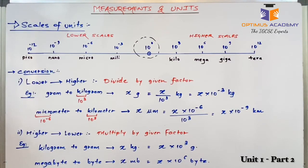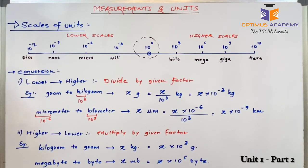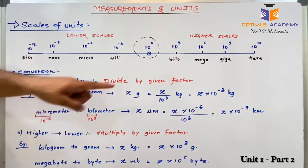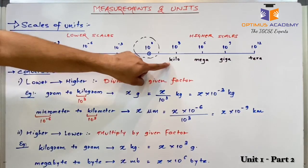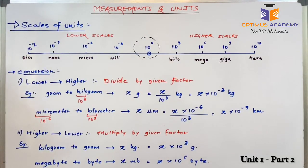These words are also called prefixes. What do we mean by prefix? It is nothing but a word that comes before the actual unit. For example, if I have gram and I want to convert it into kilogram, I will use the prefix kilo. For mega, we call it megagram, etc.